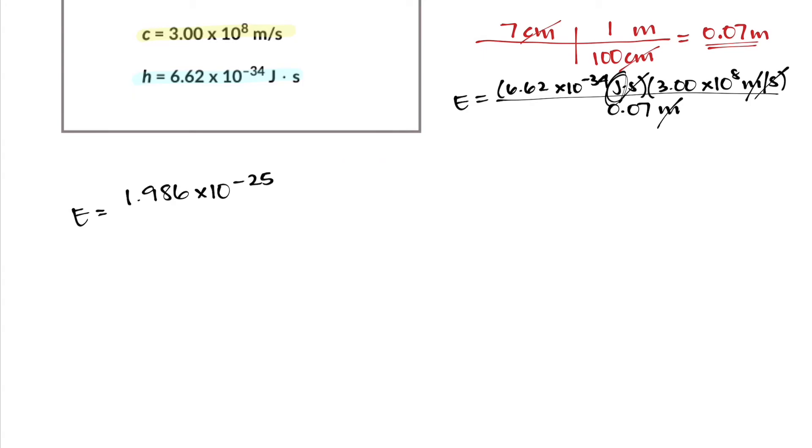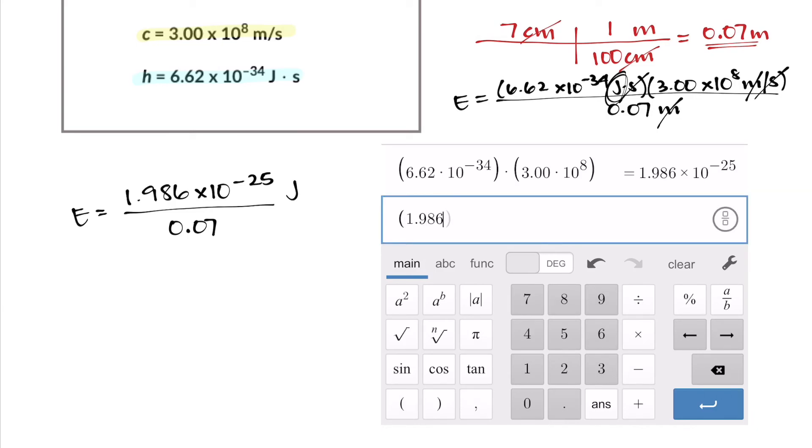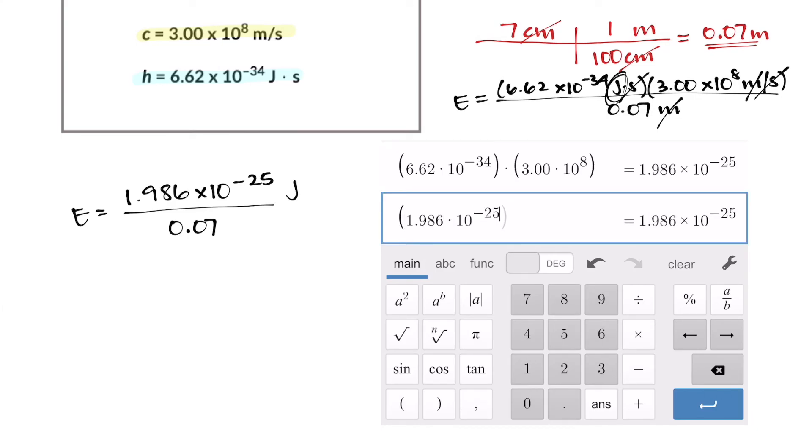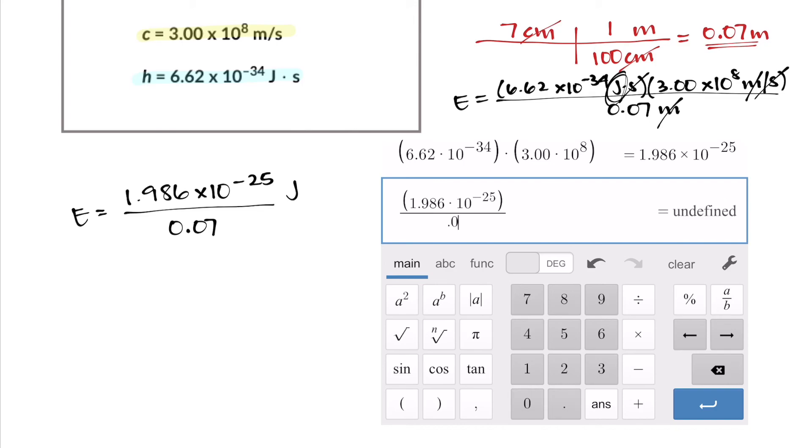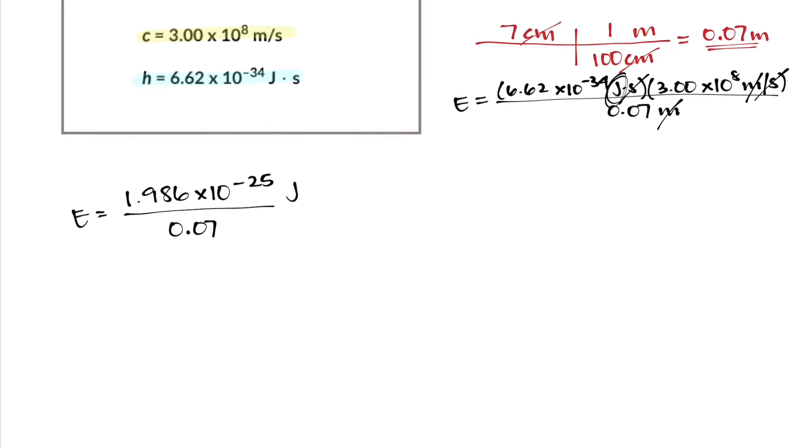The only unit we have left here is joules. Now that number in the numerator is just going to get divided by 0.07. So when you divide 1.986 × 10^-25 by 0.07, you get a value of 2.837 × 10^-24 joules.